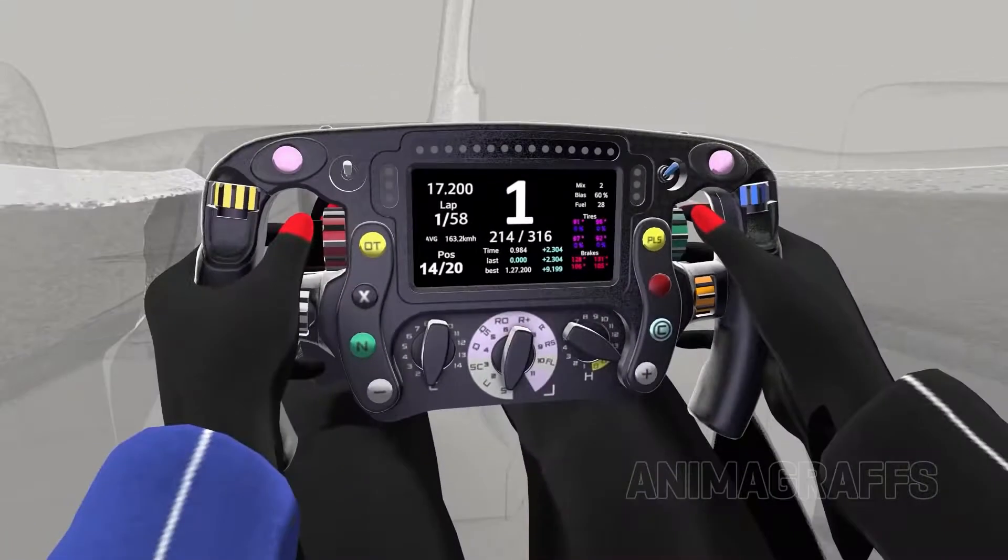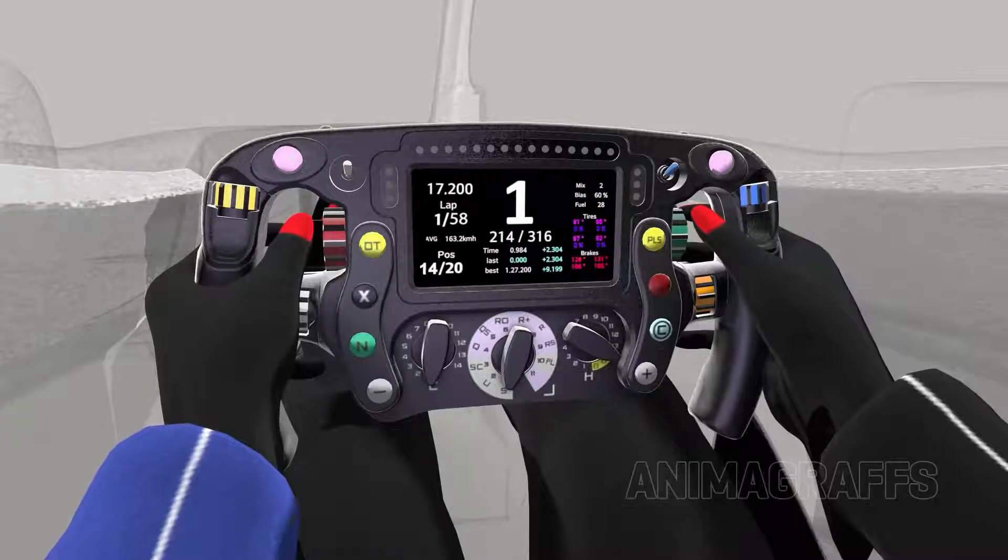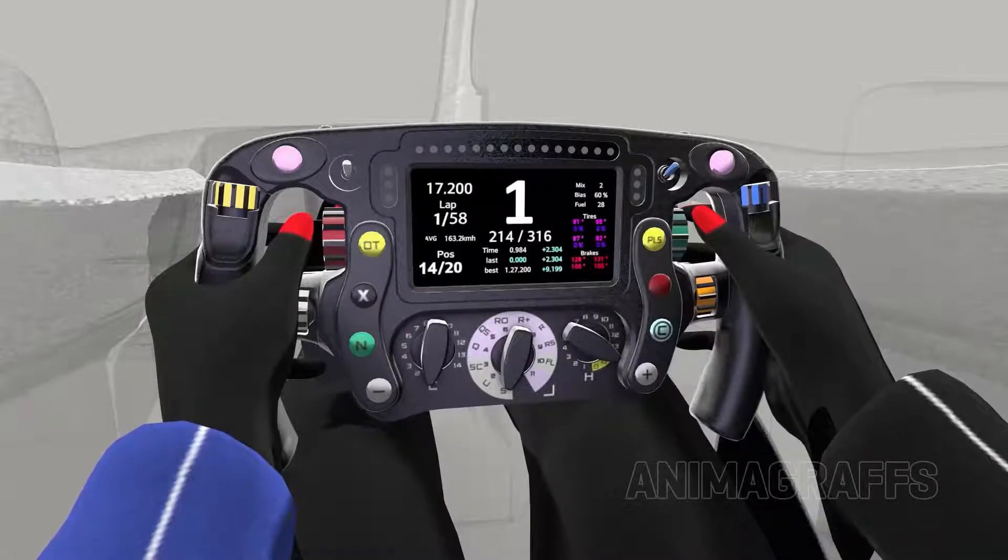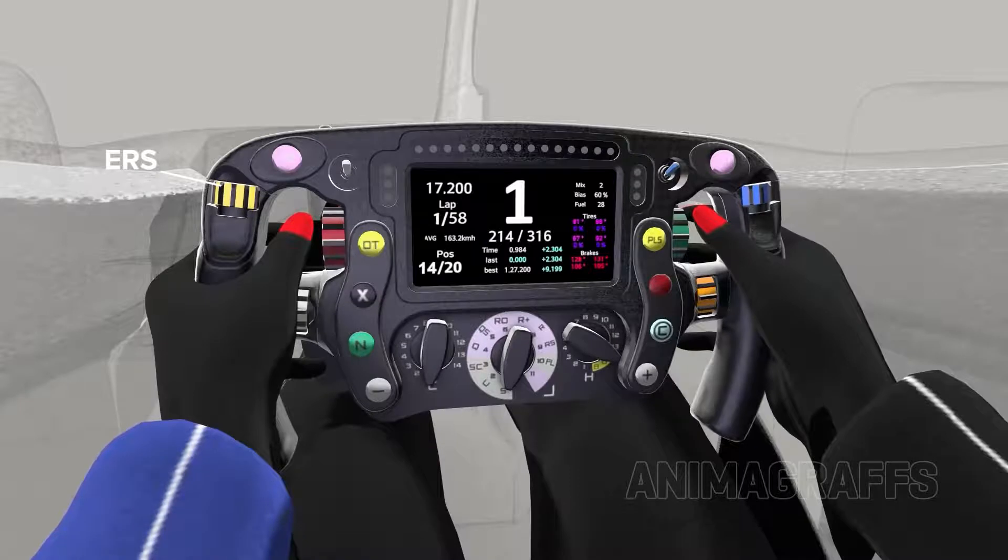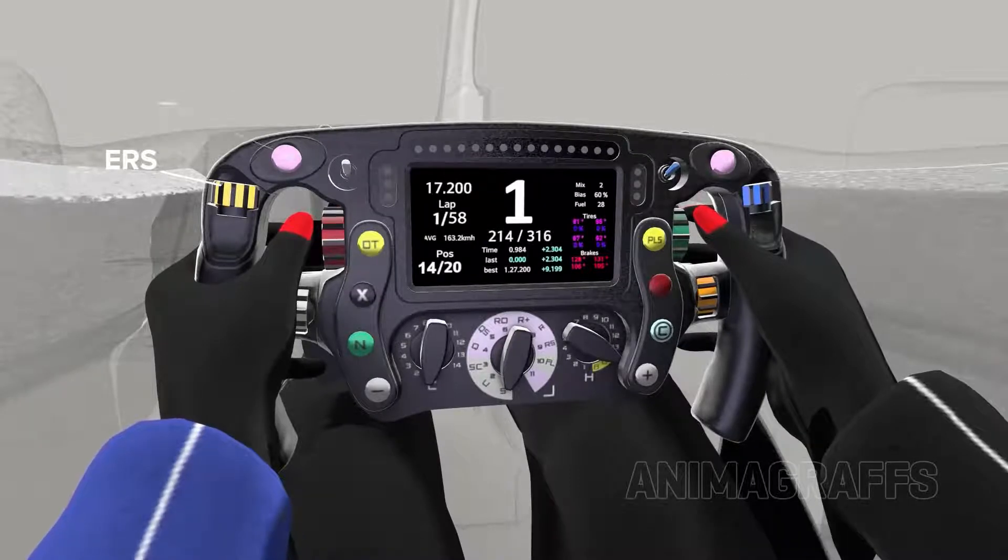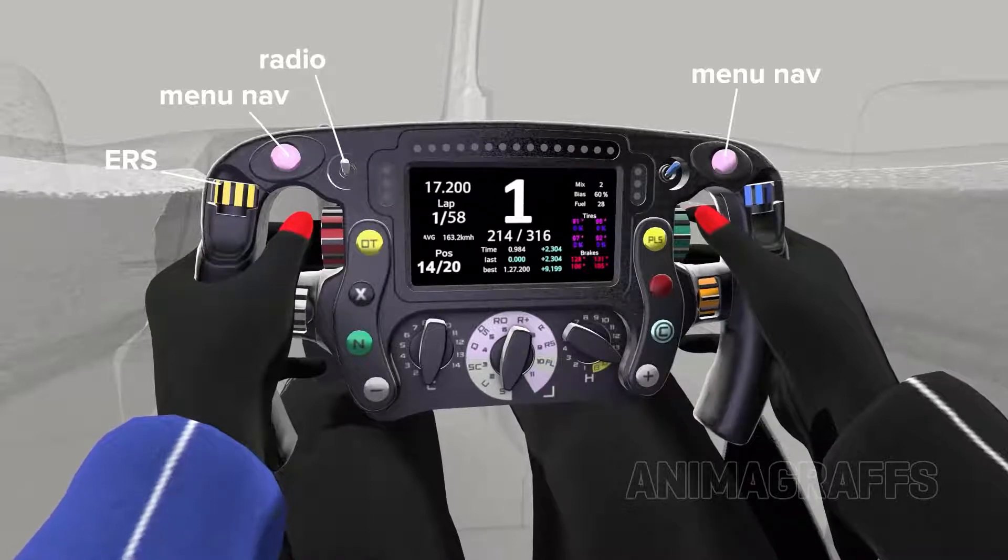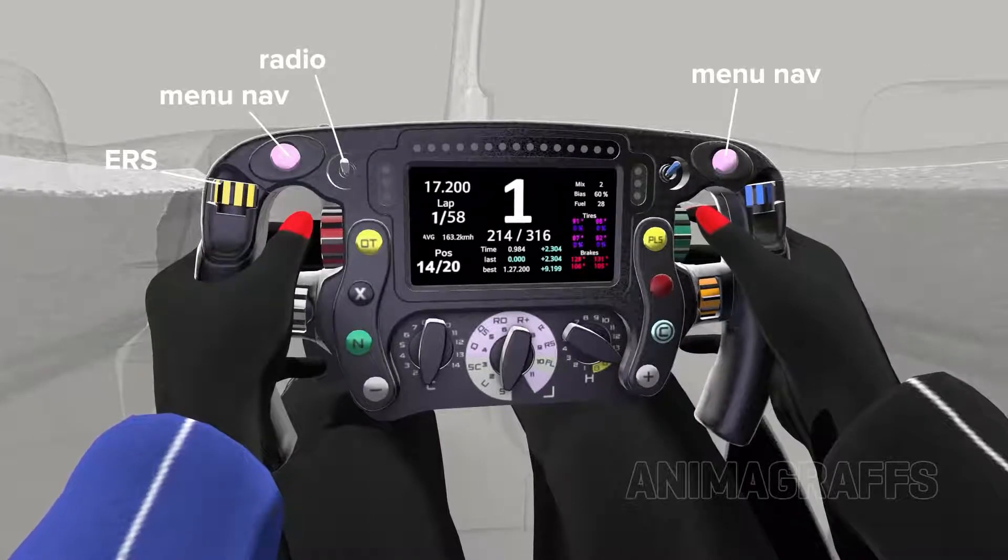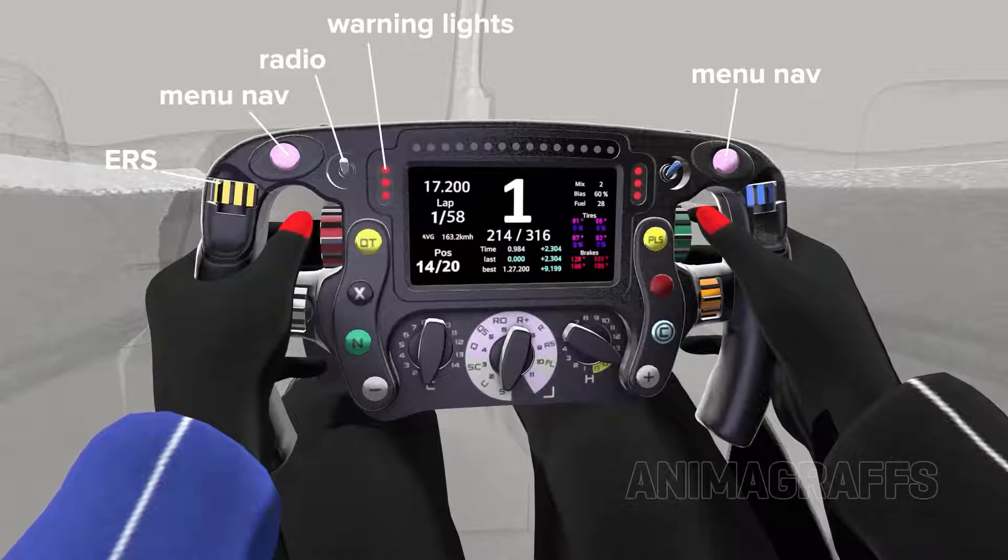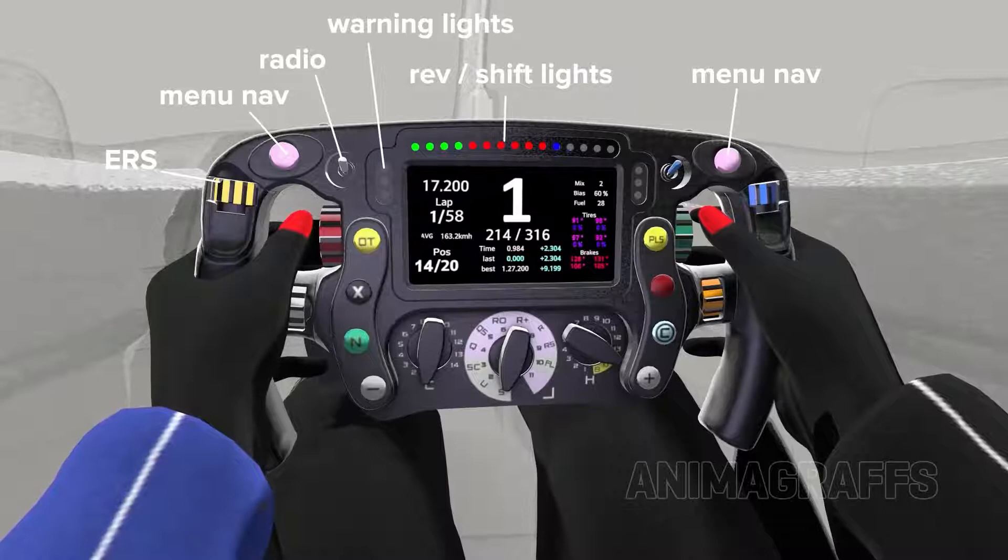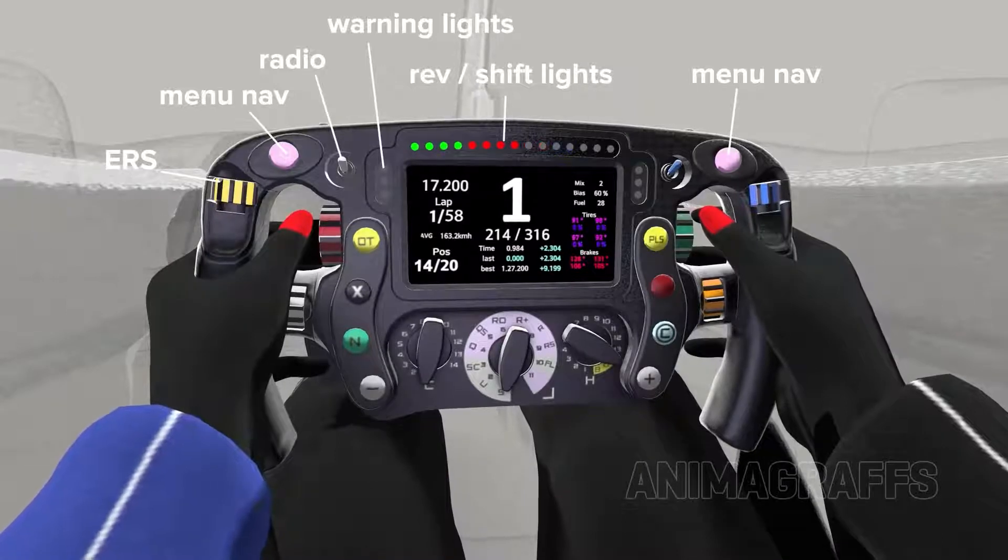The daunting array of knobs, dials, and LEDs gives drivers and teams fine controls that can be adjusted on the fly during a race. Clockwise from the upper left, there's the energy recovery system dial to control the MGU-H and K, left and right menu navigation buttons, a push-to-talk radio switch for team communication, LED warning lights for critical systems, and a row of LEDs across the top of the display acts as a rev counter and shift light system.